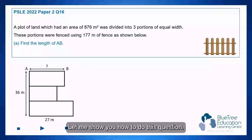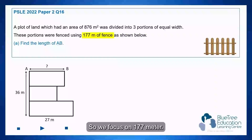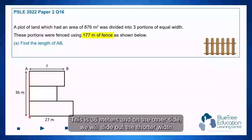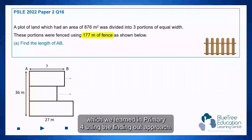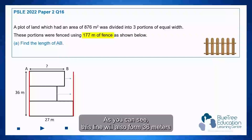Let me show you how to do this question. We focus on the 177 meters. You can see the red line that I'm highlighting over here — this is 36 meters. On the other side, we slide out the shorter width using the sliding out approach we learned in Primary 4. As you can see, this line will also form 36 meters.